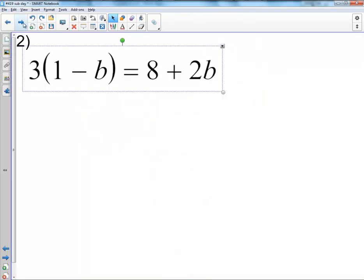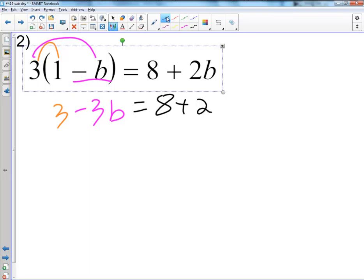Next problem, what we have here is number 2. Please realize you can go back and pause it on that last screen. First thing I'm going to do is distribute. So I have 3 times 1 which is 3. Then I have 3 times negative b, which is negative 3b. And then what I have is equals 8 plus 2b.